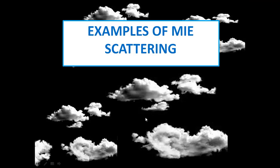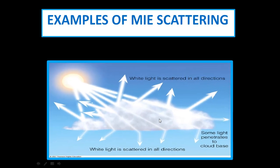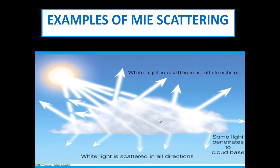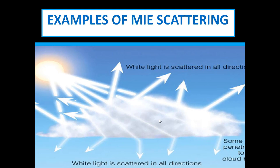An example of Mie scattering: why do clouds appear white? When you compare atmospheric particles with particles in a cloud, the particles in the cloud are larger than the atmospheric particles. We know sunlight is white, that is a combination of all colors. When sunlight passes through the cloud, the light rays are scattered by water droplets almost equally — they scatter all colors equally — and these combine again to produce white color. That is why the sky appears blue and the clouds appear white.